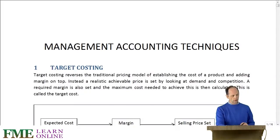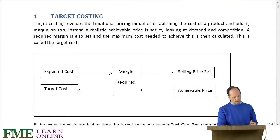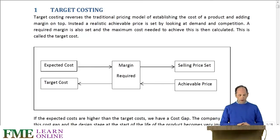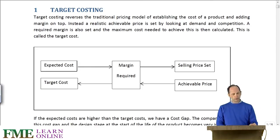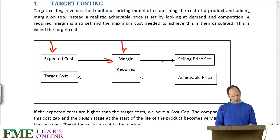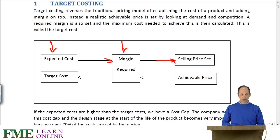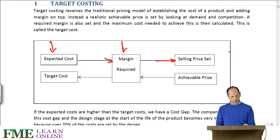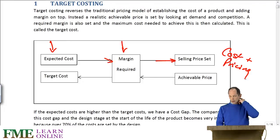First of all, target costing. Target costing is effectively reversing what we normally do in cost-plus pricing. With cost-plus pricing, we have the expected cost, we then have a margin required, we add that on, and that gives us the selling price.